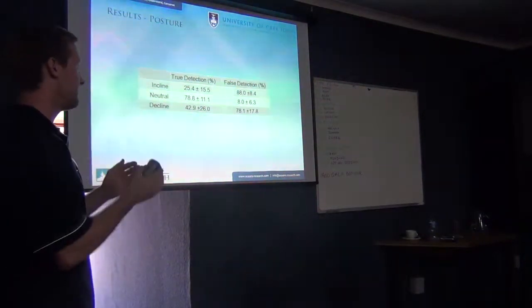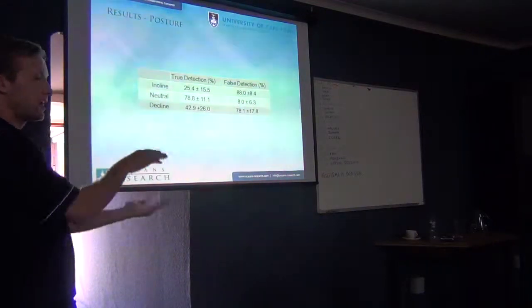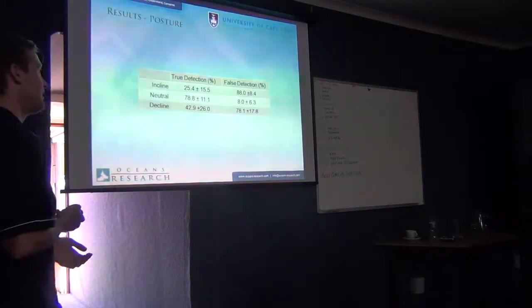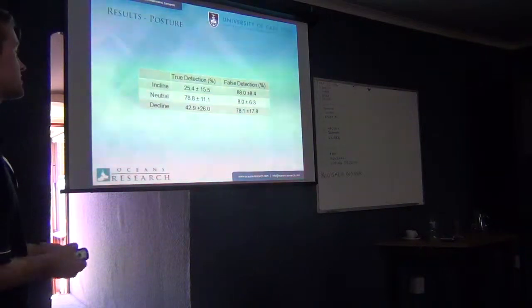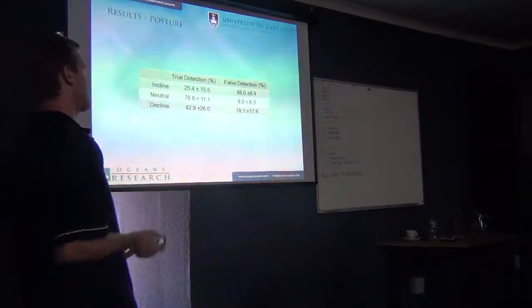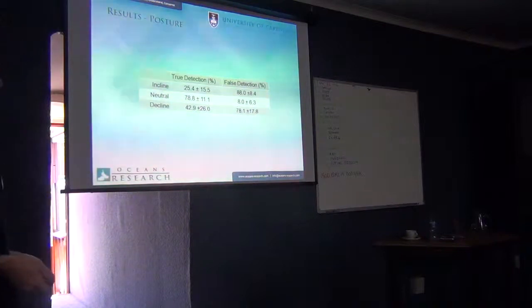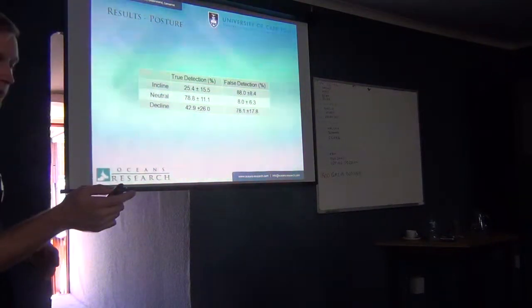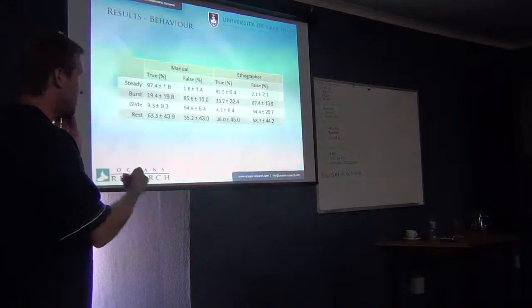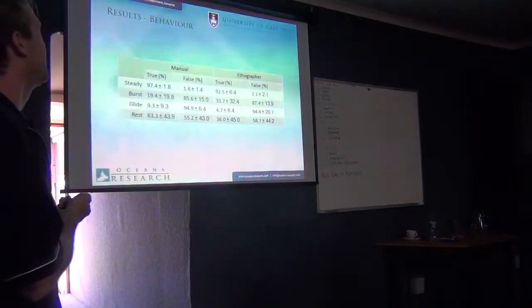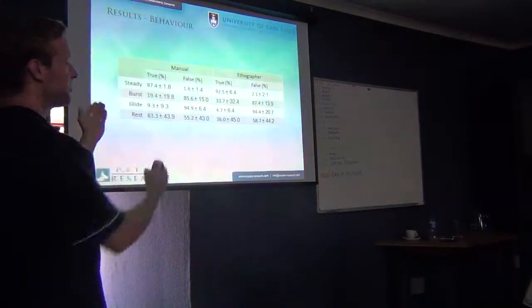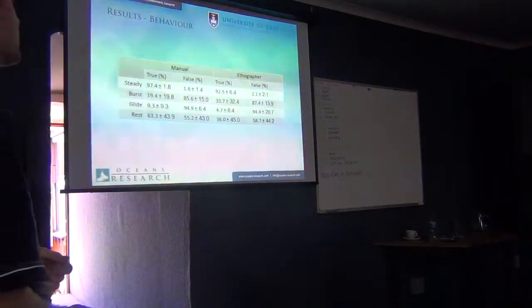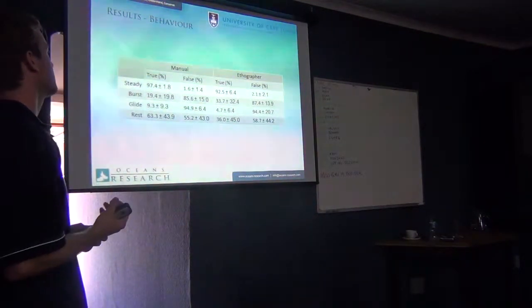But you see here, even with these very coarse categories of posture, it really, there's not a lot of information here. There was some success in the neutral category, very low false detection and very high true detections. But that could be, 90% of the time the animal is swimming horizontally. So we'll talk a little bit about maybe why this failed in a bit. But then again, this didn't really work as well as I had hoped for the behavior also. Just watching it on the computer, it does match up quite well. But we struggled to really say this quantitatively.